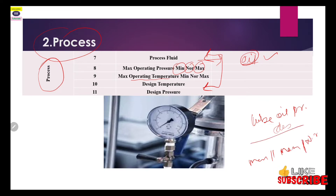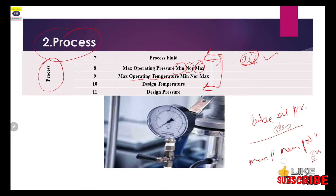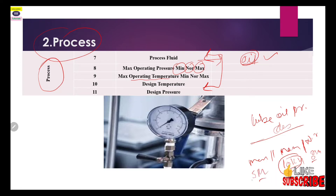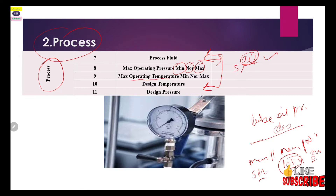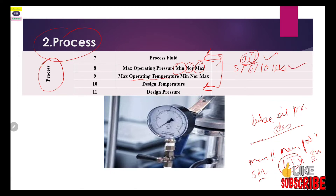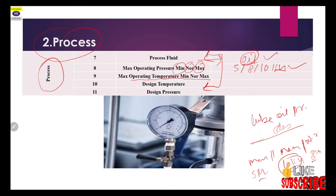For operating pressure, you need minimum, normal, and maximum values. For example, if your lube oil normally produces 8 kg pressure but can reach 10 kg in the worst condition, and the minimum is 5 kg, then you write minimum 5, normal 8, and maximum 10 kg in your pressure gauge data sheet.